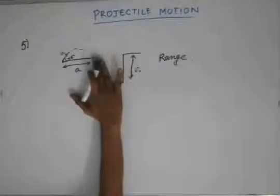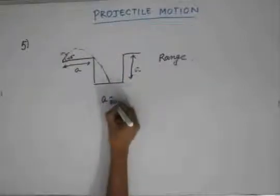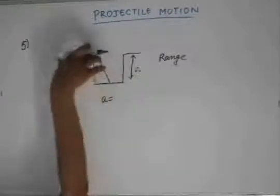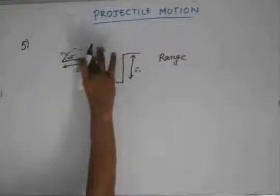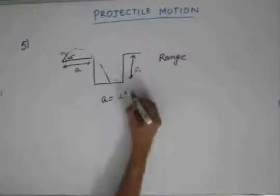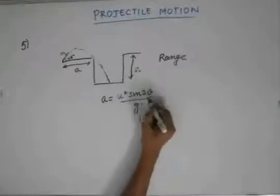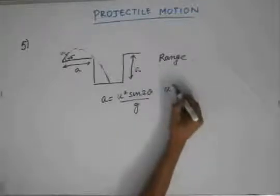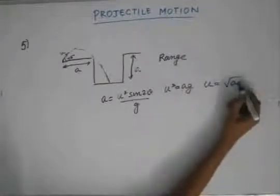Considering just the first part — from launch to the near edge — this is equivalent to a particle projected on a horizontal surface landing on the same surface with range a. Using the range formula R = u²sin2θ / g, with θ = 45°, sin90° = 1, so u² = ag, meaning u = √(ag). This is the first condition.